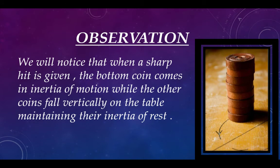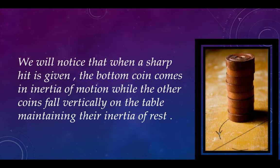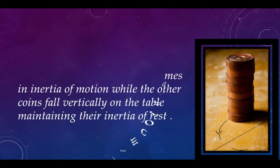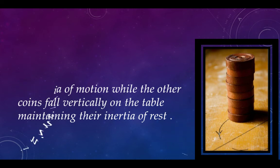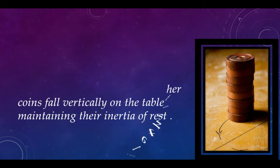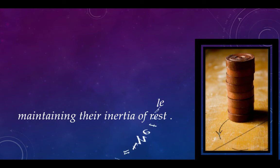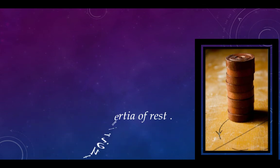So, what we will observe after the activity? We will observe that when the sharp hit is given, then the bottom most coin of the pile comes to inertia of motion and gets out of the pile quickly. While the other coins in the pile fall vertically on the table, maintaining their inertia of rest.